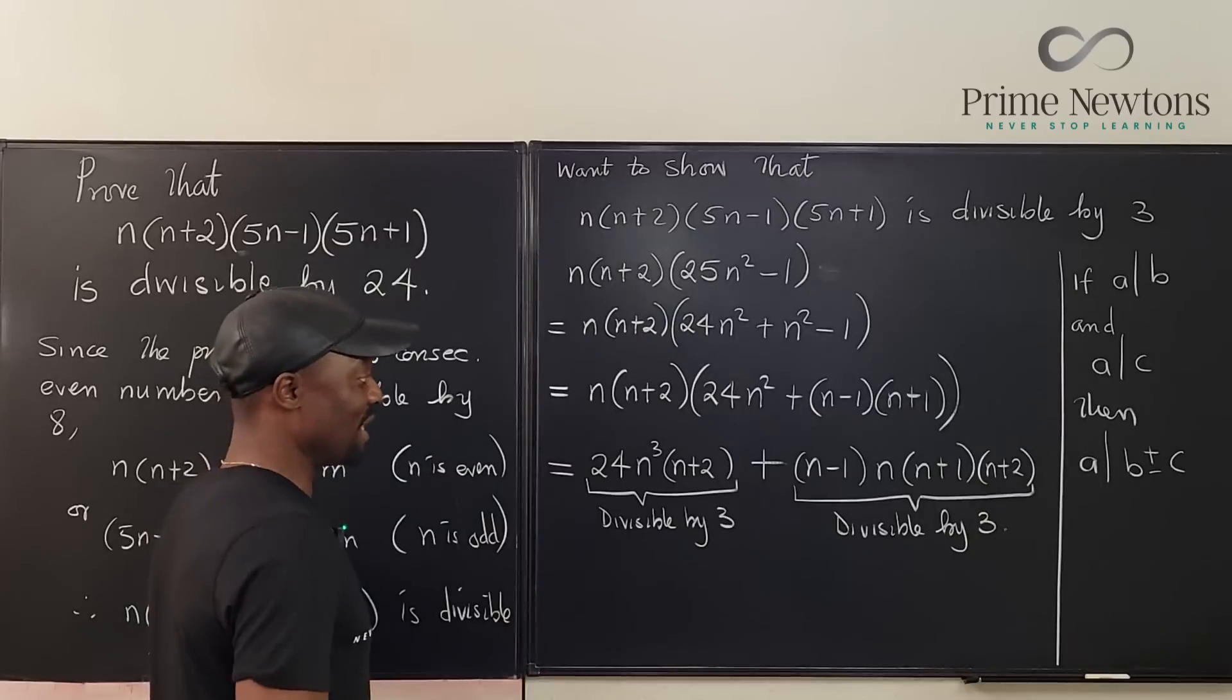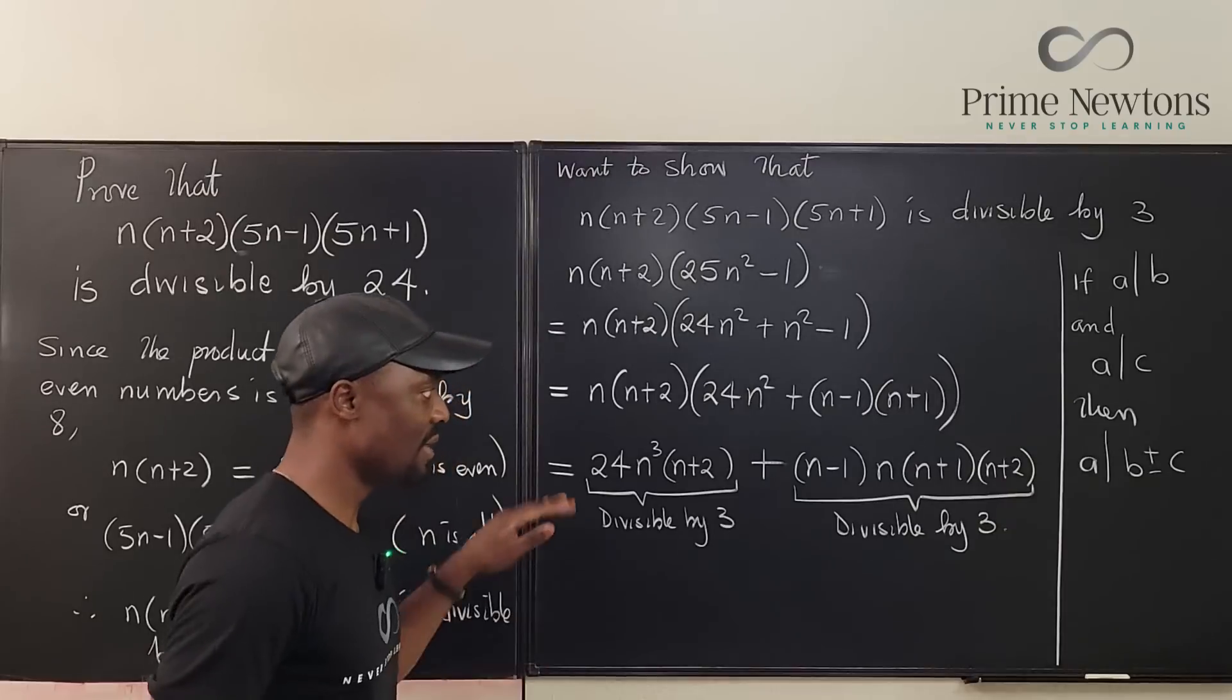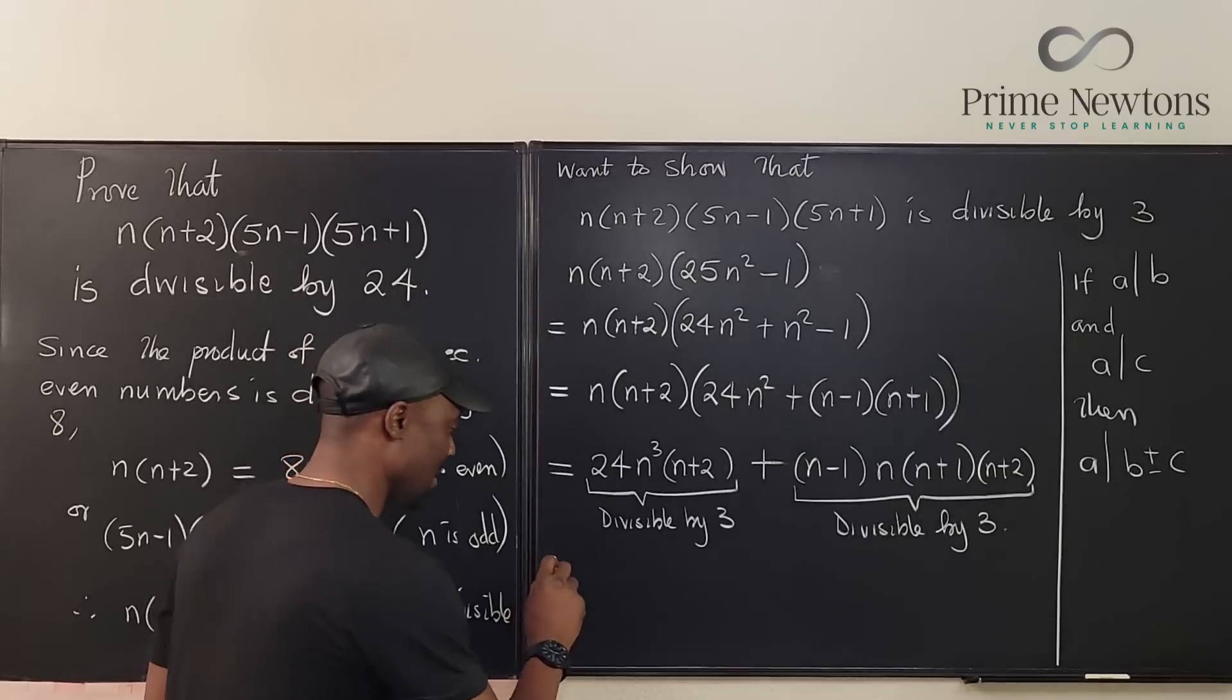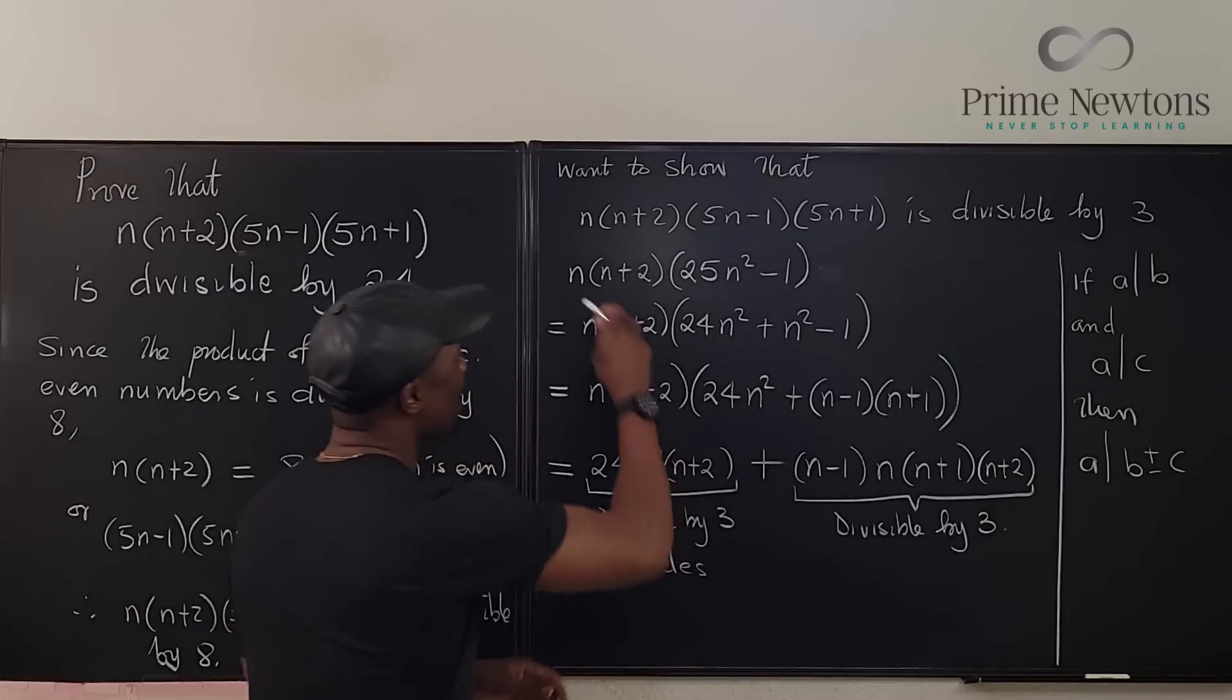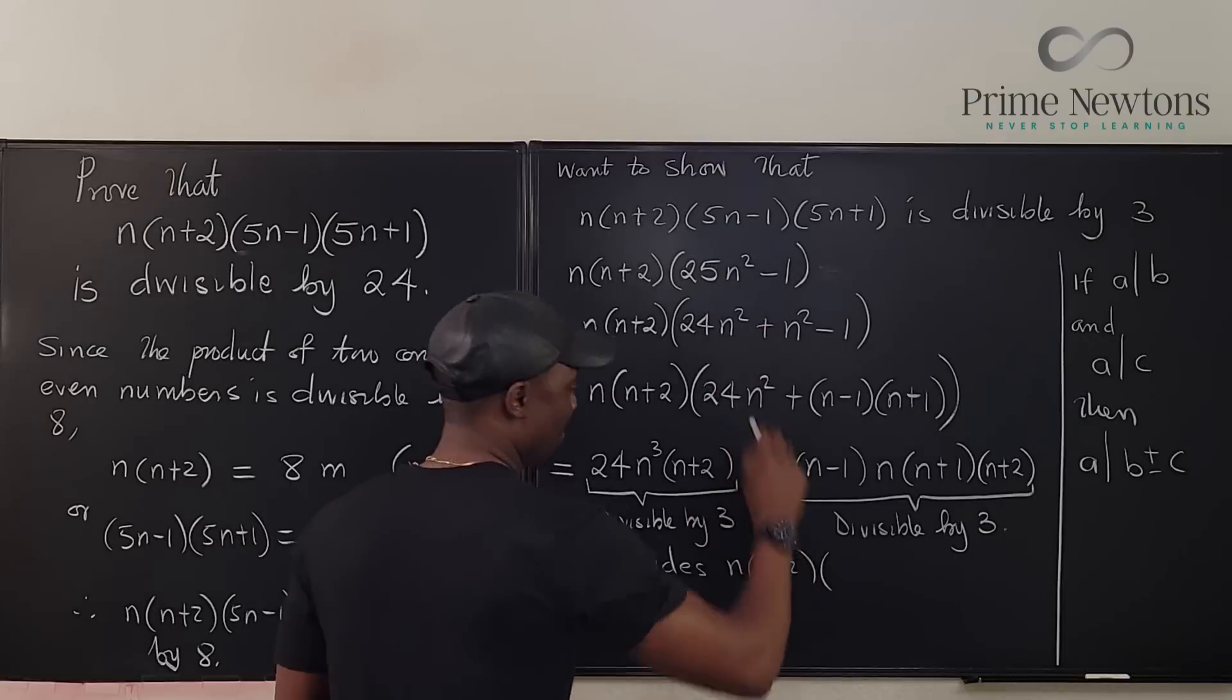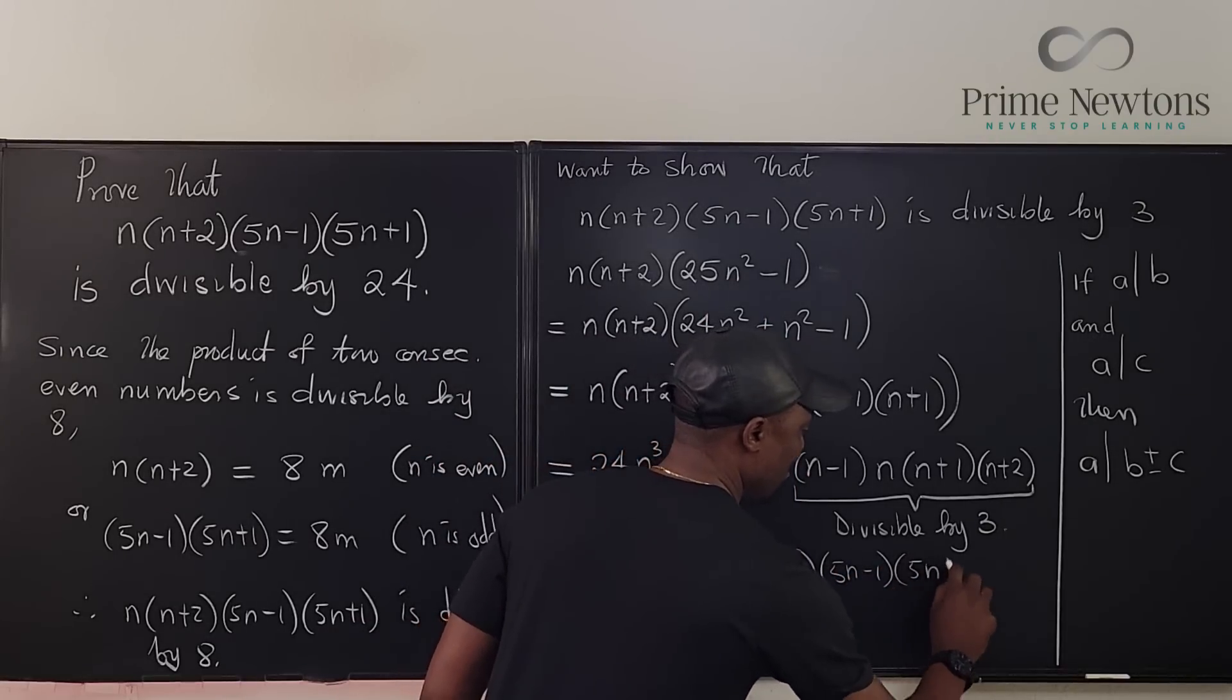So that's it. Because 3 divides this and 3 divides this, 3 will divide the sum. But what is the sum of this? Well we go all the way. This is it. It was this that we broke down. So we say, therefore, 3 divides this guy: n times n plus 2 times 5n minus 1 times 5n plus 1.